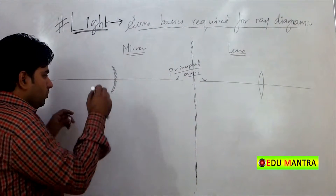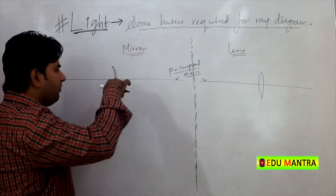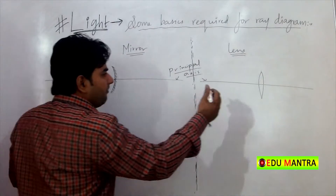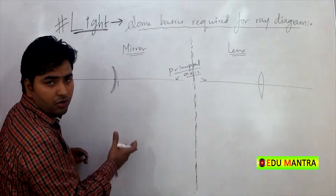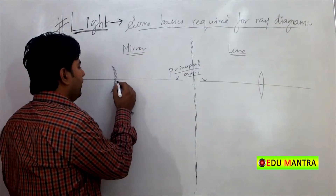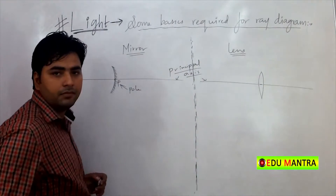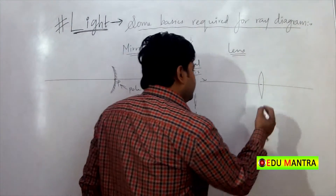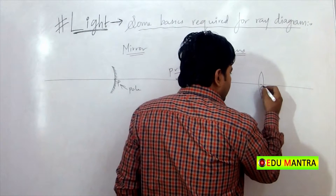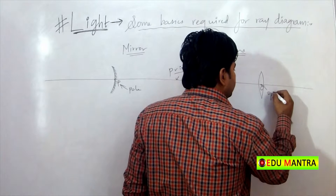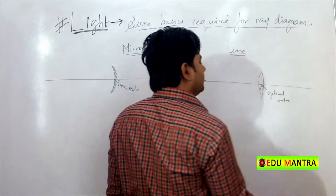Jahaan se jo perpendicular bisector jo point hai, jo center form karta hai, jis mirror ya phir lens ka — in case of mirror, that point, whether it is a concave mirror or a convex mirror, jo point ko kya kerte hain, that point is called the pole of the mirror. Aur jo center point jo lens ka hota hai, for any lens, that point is called the optical center. Lens ke liye optical center, aur mirror ke liye usko kaha jata hai pole.